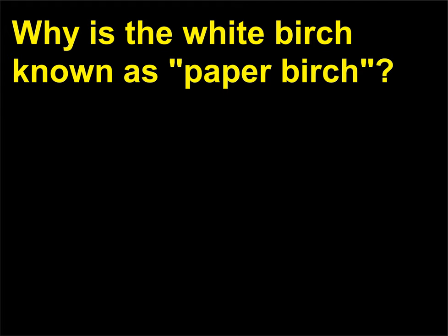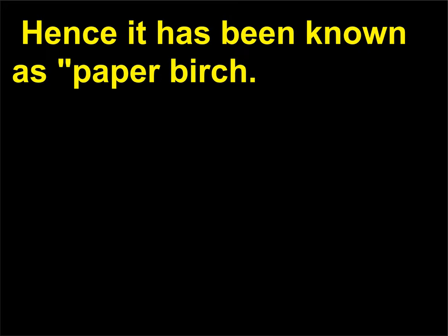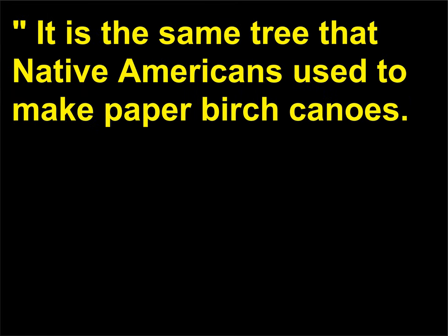Why is the white birch known as paper birch? The outer layer of the birch tree grows in sheet-like layers, hence it has been known as paper birch. It is the same tree that Native Americans used to make paper birch canoes.